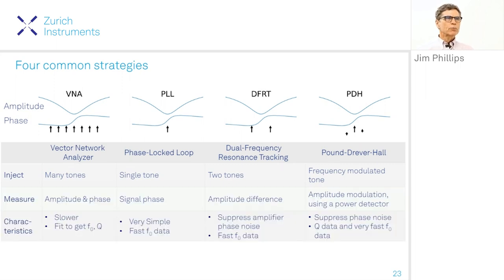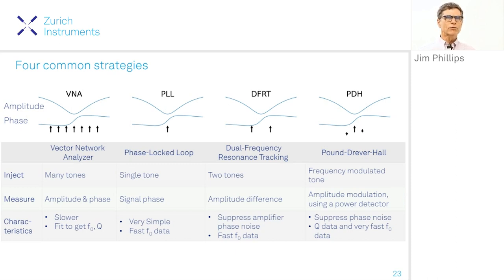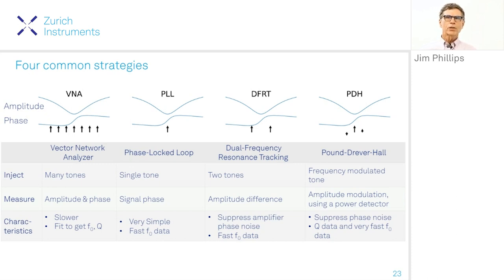With the VNA we measure amplitude and phase, do a least-squares fit, and obtain center frequency and Q after the fact — somewhat slower. With the phase-locked loop, measurements are very fast: a continuously running oscillator whose current frequency is the current resonance frequency, measuring the phase of the resonator's transfer function and feeding back to hold it at a set point. With PDH, the method is based on the conversion of frequency modulation to amplitude modulation by the resonator when the carrier is off the resonance center, obtaining a signal linear in small departures from the resonance center.